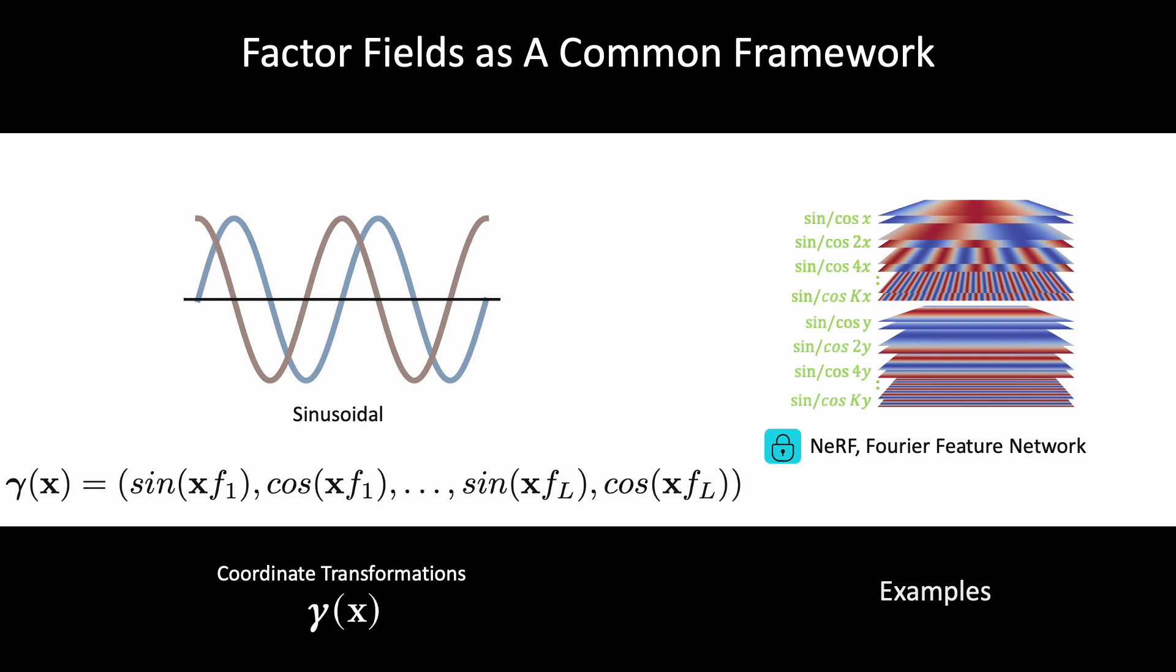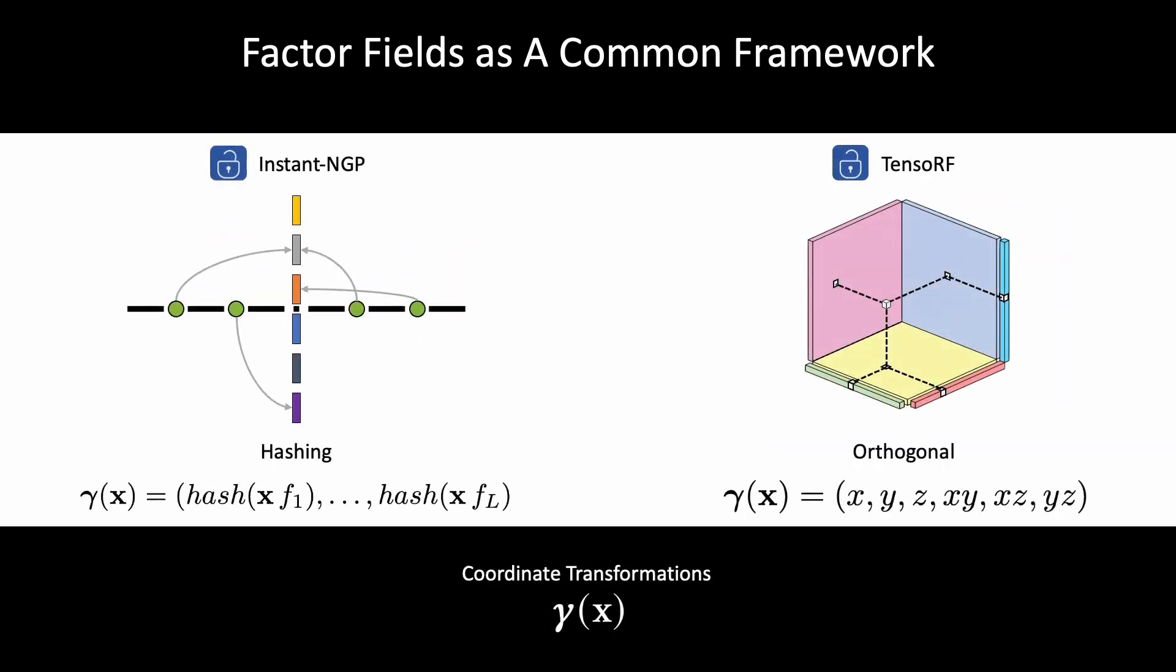Instead, Instant NGP uses a multiscale hash mapping and Tensurf uses an orthogonal coordinate transformation function. We have introduced the coordinate transformation functions and field representations.